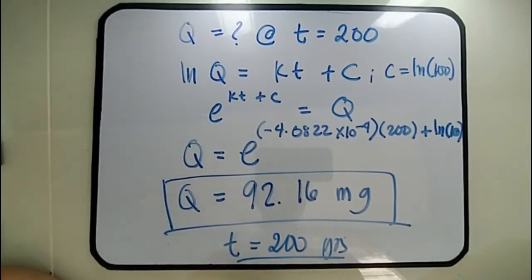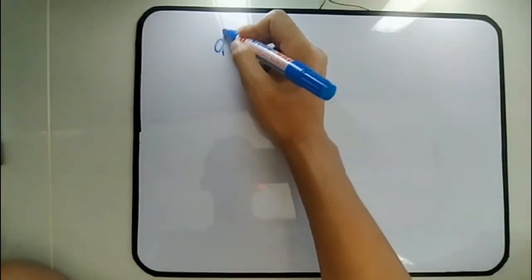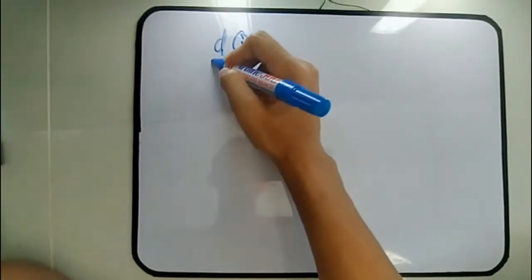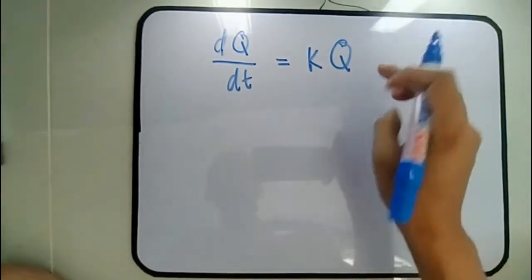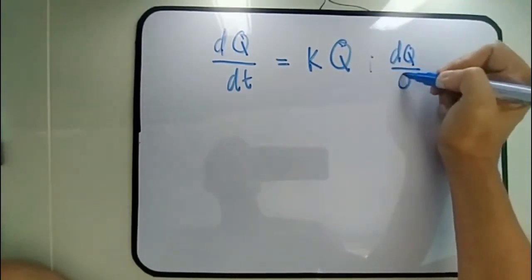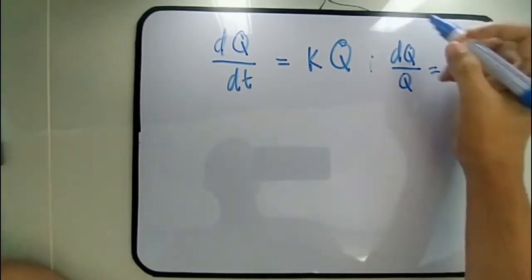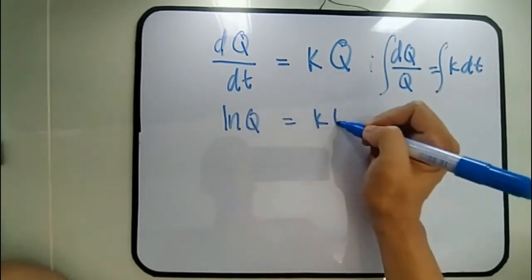Let's try another problem. Radium decomposes at a rate proportional to the amount present. If half of the original amount disappears after 1000 years, what is the percentage lost in 100 years? The rate of change of the amount of the substance with respect to time is proportional to the amount at any time T. Separating variables: dQ/Q = K dT. Integration yields ln Q = KT + C.